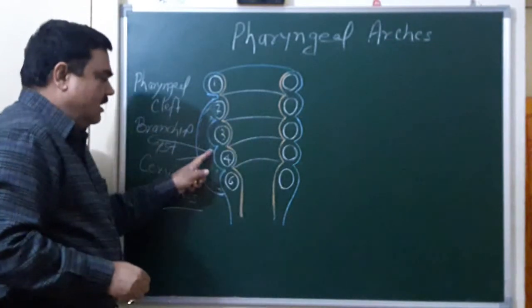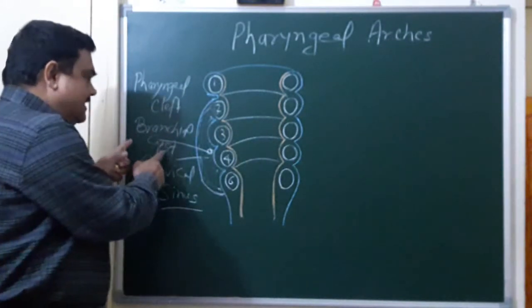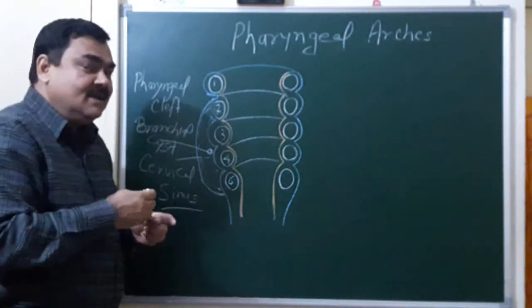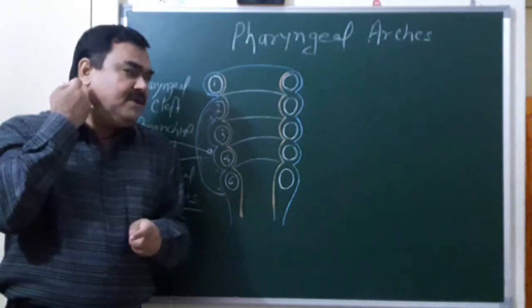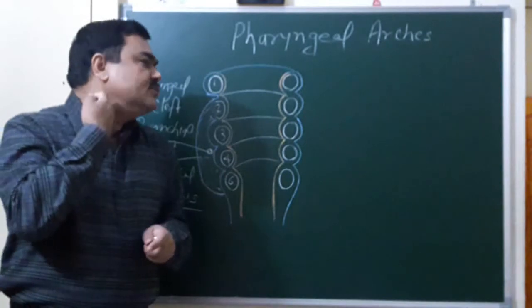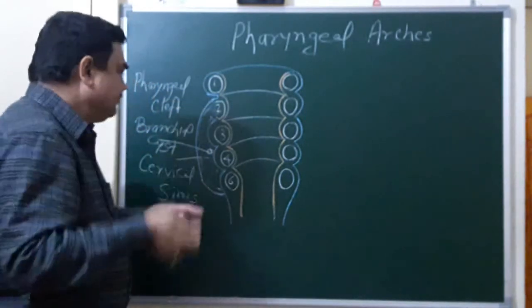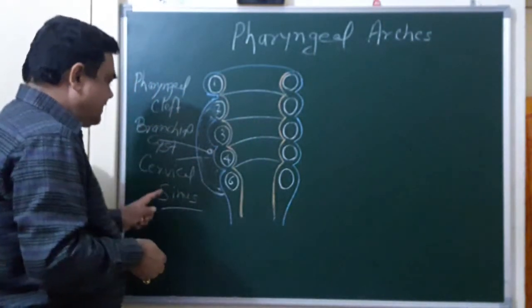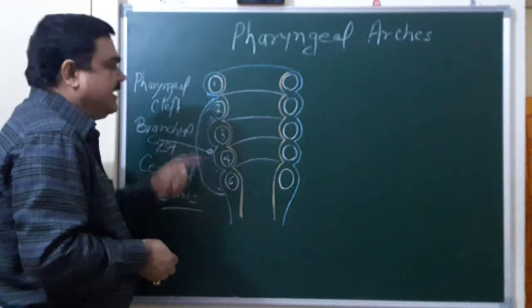And position of the brachial cyst or brachial sinus, because it lies just anterior to sternocleidomastoid muscle, just anterior to sternocleidomastoid muscle. Here, so this is brachial cyst, brachial sinus.